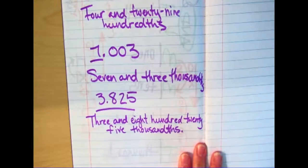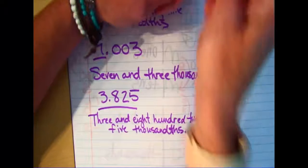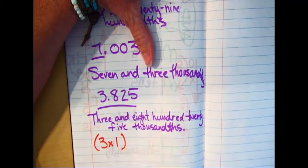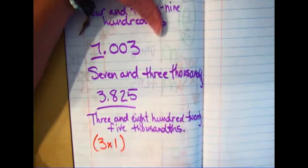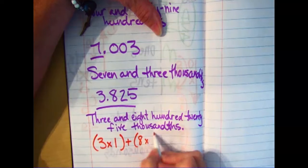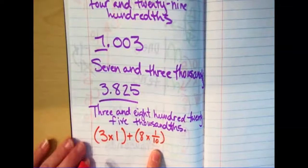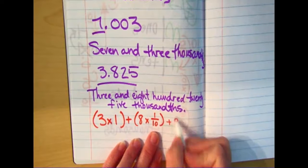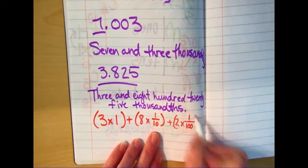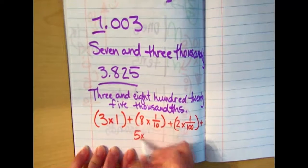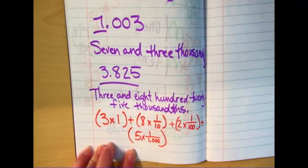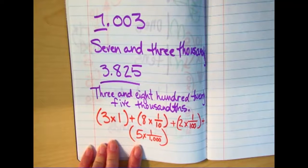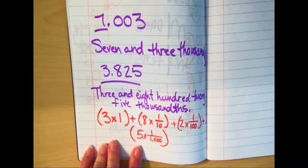It takes practice to read numbers correctly. The other thing you'll see is expanded form — it'll look a little different. For three and eight hundred twenty-five thousandths, it says: three times one, plus eight times one tenth (sometimes written as a fraction, sometimes as a decimal), plus two times one hundredth, plus five times one thousandth. This comes up in the Motivation Math books and Study Island. You're just doing expanded form and breaking all the pieces apart.